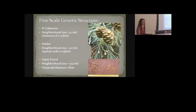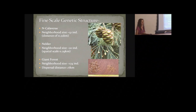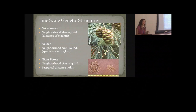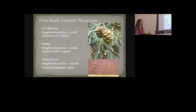We looked at fine-scale genetic structure within three populations. North Calaveras is quite small — less than half a square kilometer — with a little over 100 mature individuals. There, the neighborhood size encompasses 51 individuals with a radius of about 0.2 kilometers. This represents the bulk of effective dispersal — actual individuals that have grown up. Since the neighborhood size versus total population size difference is not very large, there's not a lot of local genetic structure within North Calaveras.